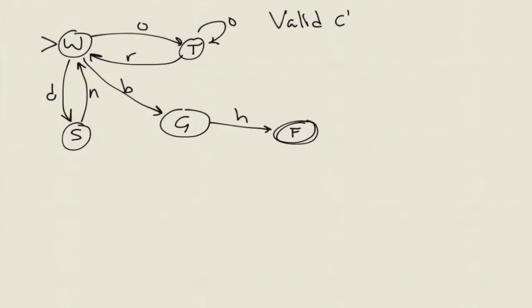What are some strings of events that represent valid cleanings? That is, can we come up with some sequences of events that result in the robot arriving home after cleaning the room? O, R, B, H is one such string. The robot would start in the W state, transition to the T state by following an O edge, and then transition back to the W state by following an R edge, then go to the G state by following B, and then finally to the F state by following H.